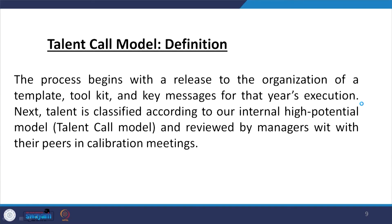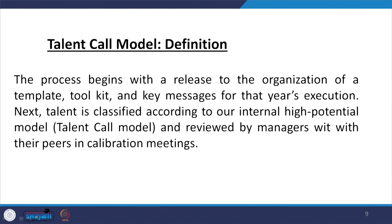There is a talent call model. The process begins with a release to the organization of a template toolkit and key messages for that year's execution. There will be a particular template and toolkit, and it is very important what type of equipment and key messages are there with these top leaders. The outcome is that we will be able to create the talent pool. Next, talent is classified according to our internal high potential model — the talent call model — and reviewed by managers with their peers in collaboration meetings.